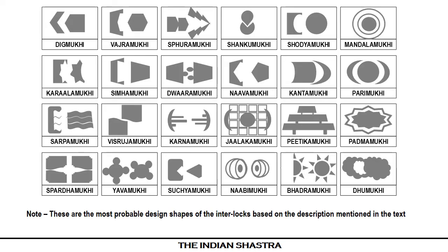Now these are the 24 interlocks of construction. One should note that these are the most probable design shapes of the interlocks based on the description mentioned in the text.